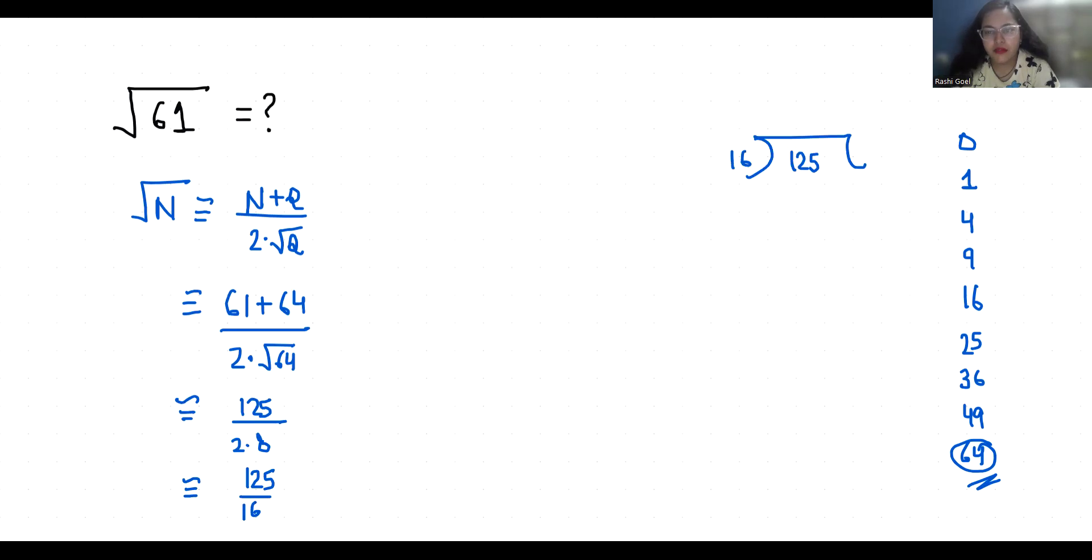16 times 7 is 120, subtract to get 30, it will pass over here and 0, 130. 16 times 8 is 128, subtract to get 20. So this approximately equals to 7.81.